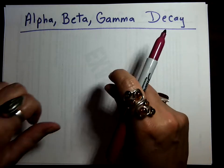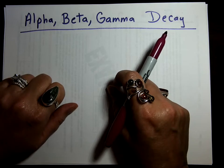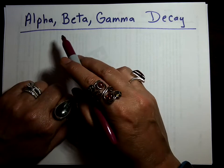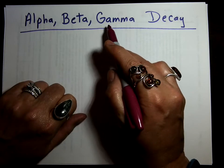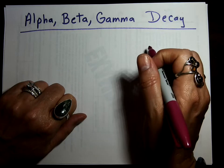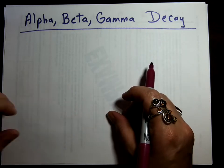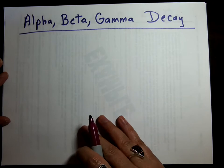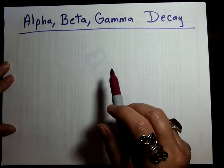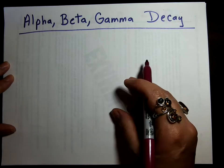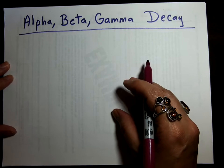Hello, Chem 107 students. This is Dr. Kim, and we're going to have a quick video on how to write alpha, beta, and gamma decay or emission reactions. So first of all, we need to know what the alpha and beta particles are and what gamma rays are in order to write these reactions.